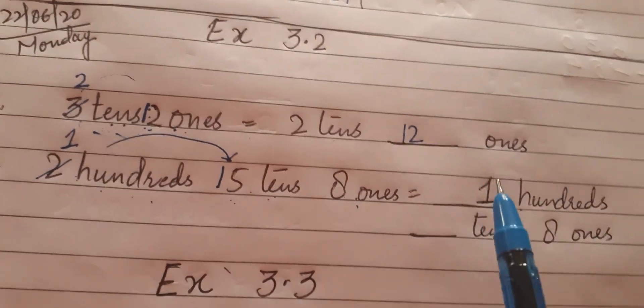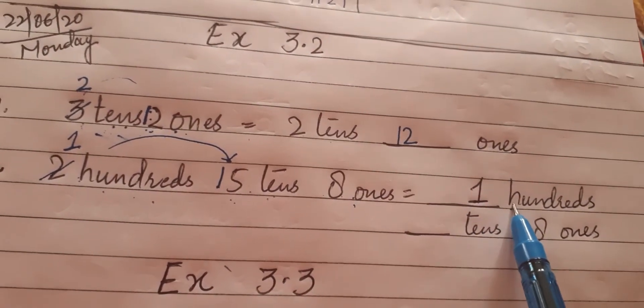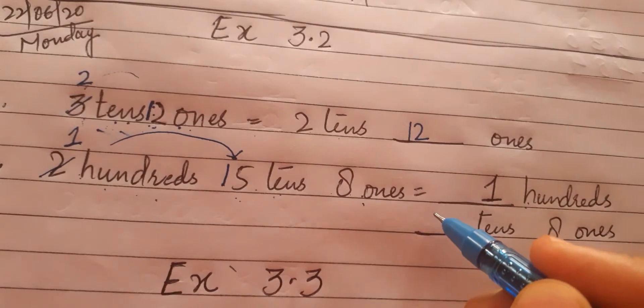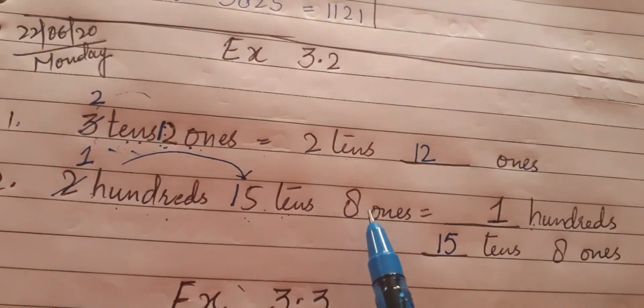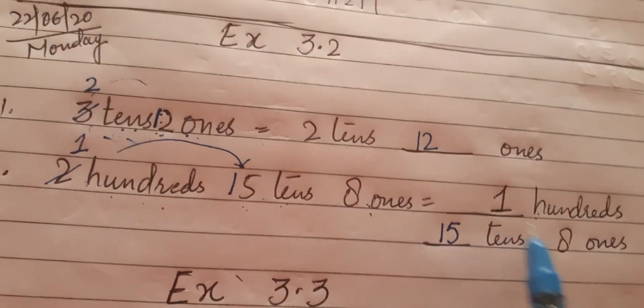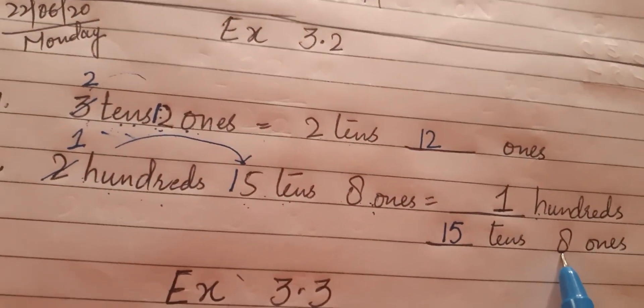So the answer is 1 hundred, 15 tens, and 8 ones. One hundred is already written, so what is the answer in the tens place? It is 15 tens. And no need to change ones place because the answer is still the same in ones place.